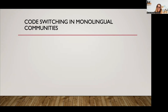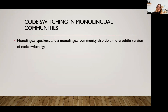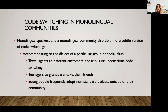In monolingual communities there's also a more subtle version of code switching. We accommodate to the dialect of a particular group or social class. For example, travel agents talk differently to different customers. This may be conscious, unconscious, or subconscious code switching. Teenagers talk differently to grandparents versus their friends. Young people frequently adopt non-standard dialects outside of their community to show solidarity, to be part of a group, and to show connection and identity with the group they want to identify with as they develop their social lives.